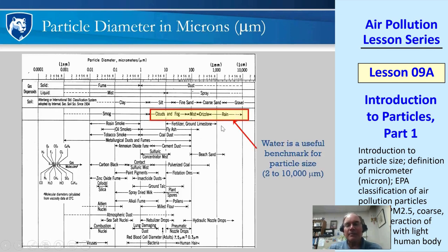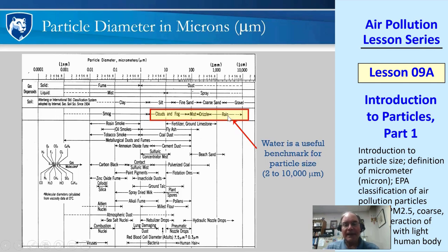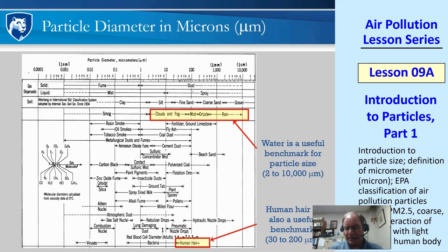Let's look at some well-known particles like water. Water particles can range from about 2,000 to 10,000 microns — the tiniest ones are little water droplets in clouds and fog, and we have mist, drizzle. When you get into rain, these are hundreds of microns, all the way up to about a centimeter. We can also use human hair as a benchmark: 30 to 200 microns is typical, depending on the type of hair. Blonde, thin hair is very tiny diameter — around 30 microns — and dark hair is typically much thicker, around 200 microns.